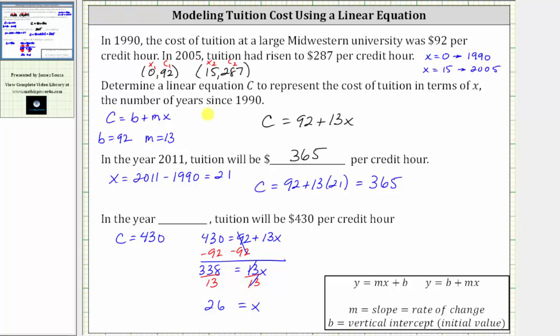Since x is the number of years since 1990, the year is 1990 plus 26, which equals 2016. In the year 2016, the tuition will be $430 per credit hour. I hope you found this helpful.